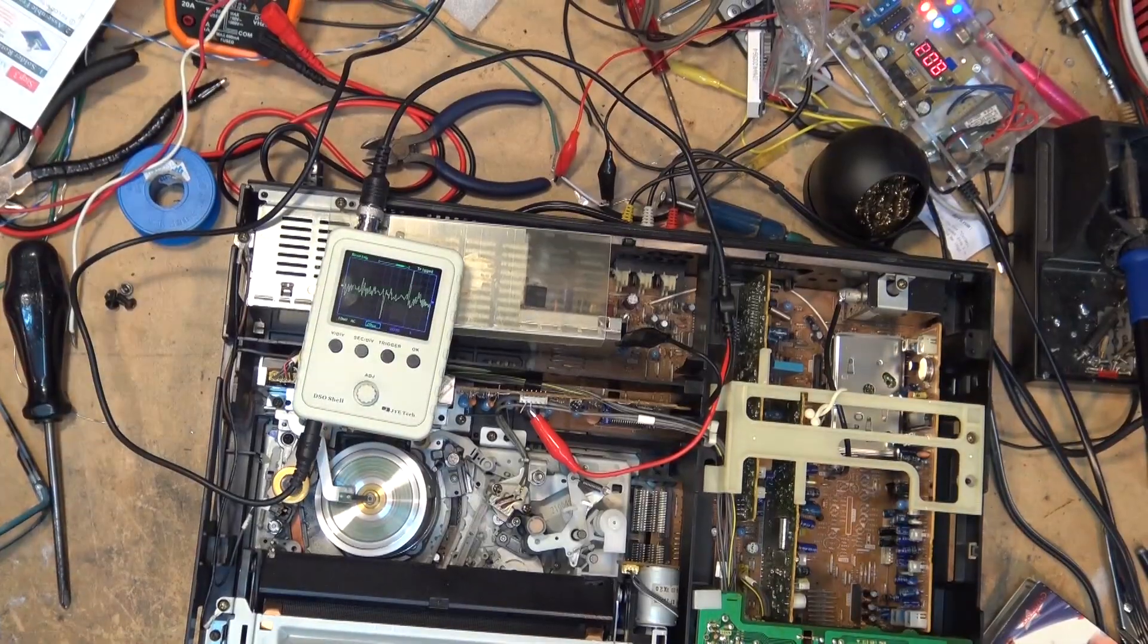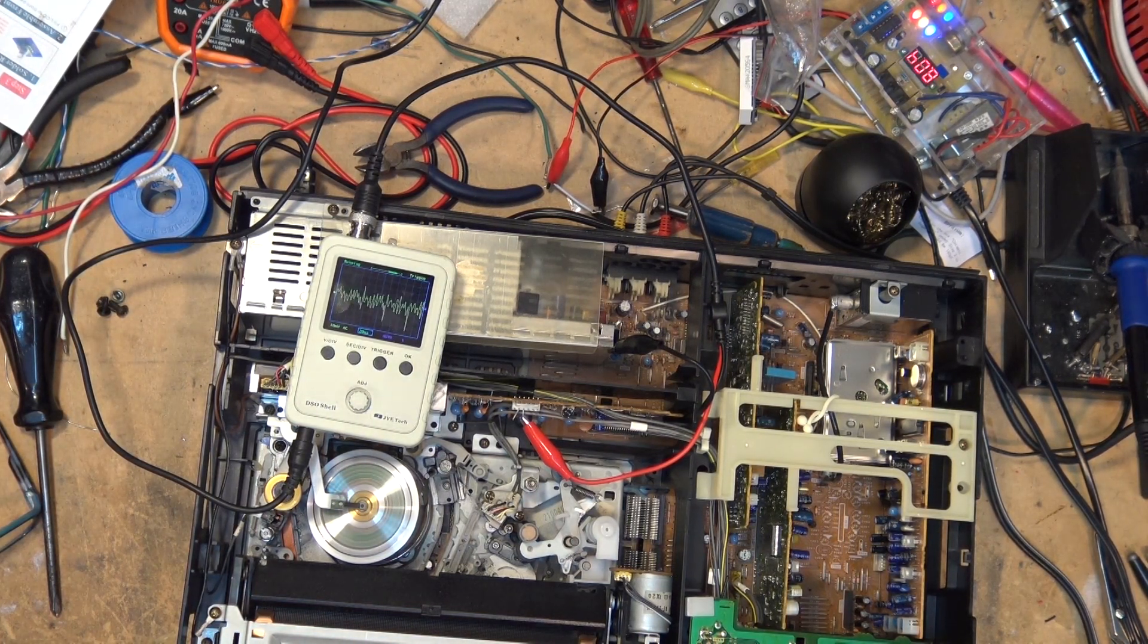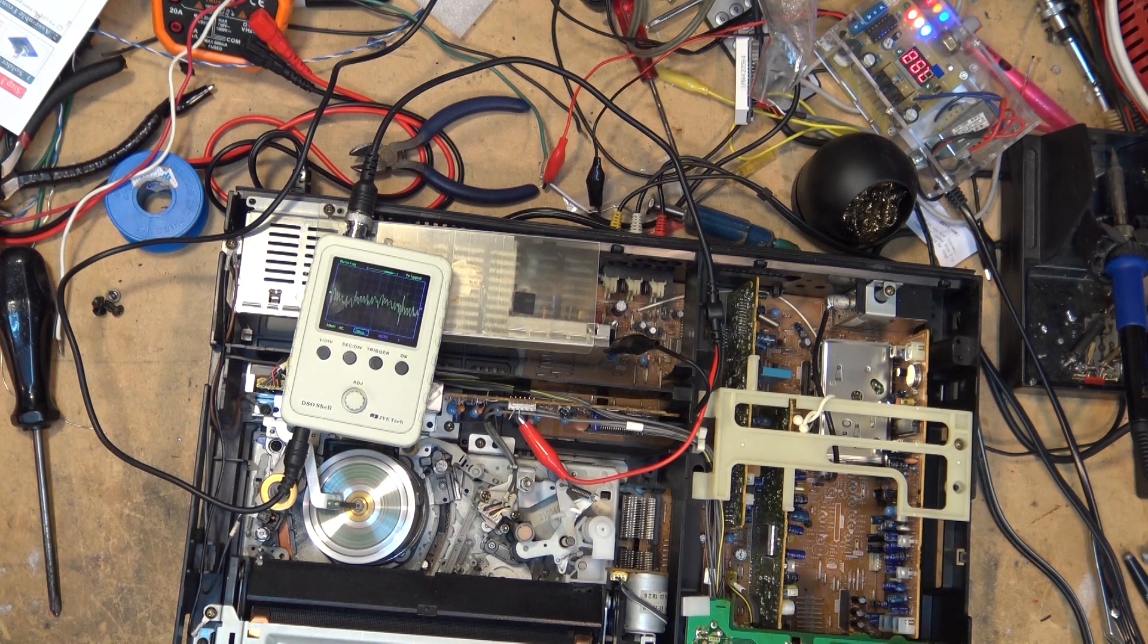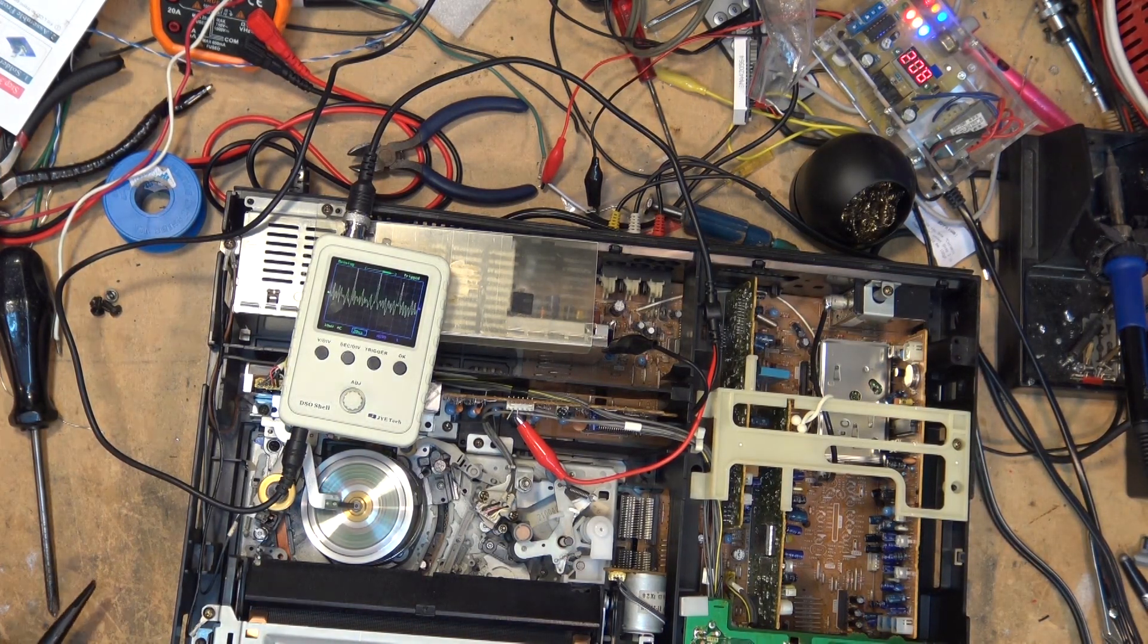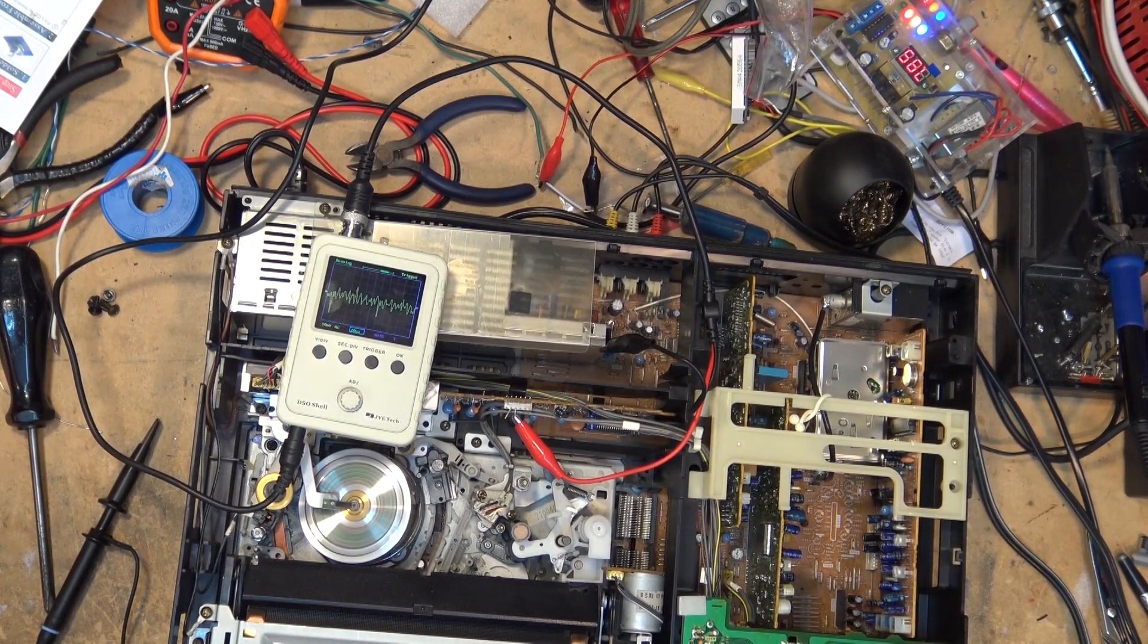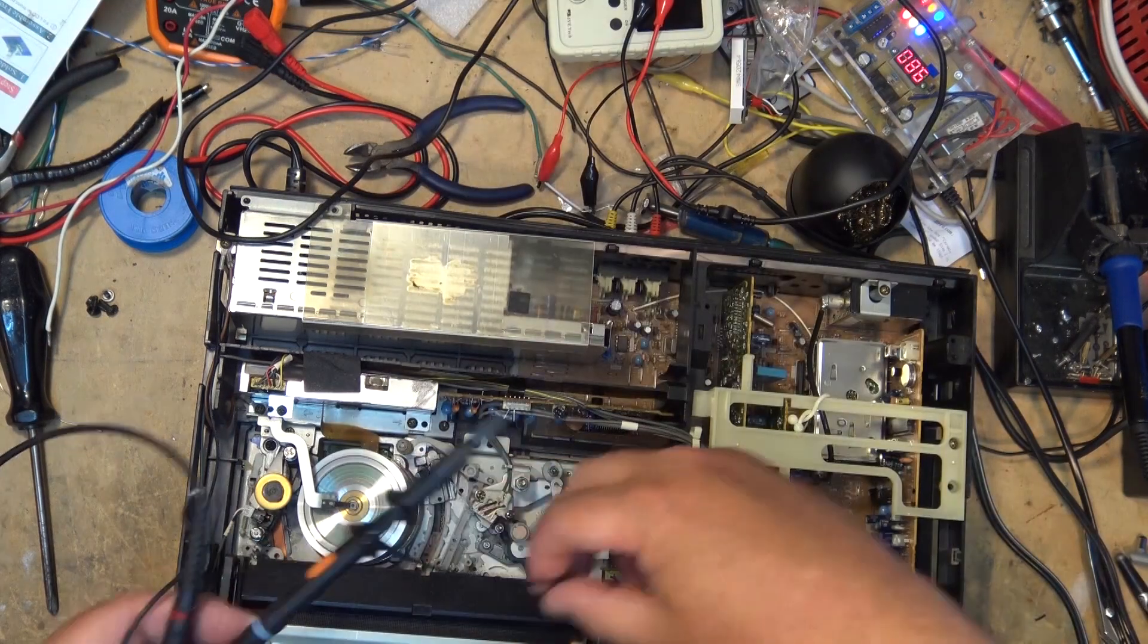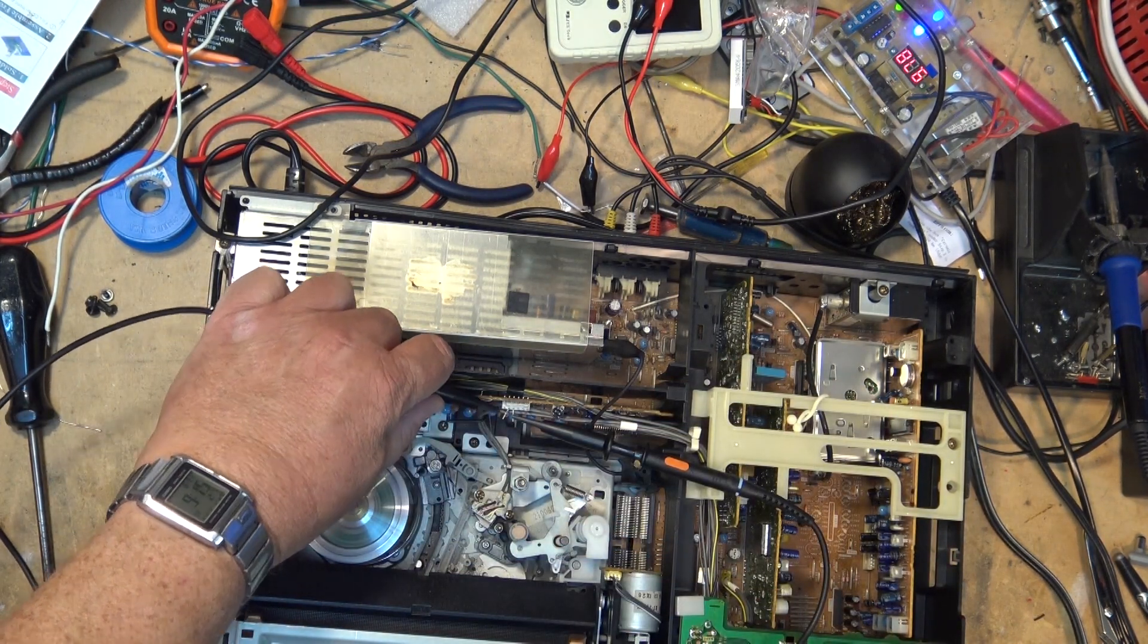One thing that someone is going to ask me - the answer is no, you cannot look at the RF for your video heads to align the heads with this scope. It does not have the bandwidth. We're looking at the RF test point from this VCR and I've got a tape playing. First it does not have external trigger which is part of the problem, but the big problem is it just doesn't have enough bandwidth.